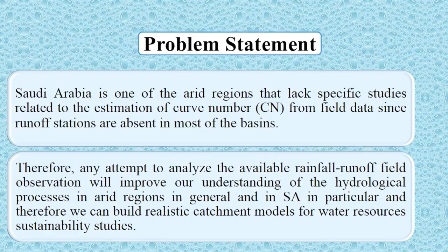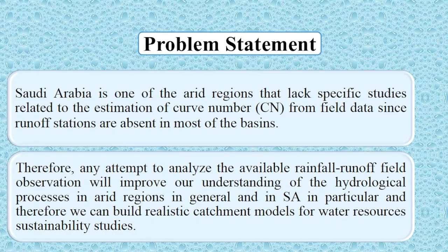Our problem statement: Saudi Arabia is one of the arid regions that lack specific studies related to estimation of curve number from field data, since runoff stations are absent in most of the basins. Therefore, any attempt to analyze the available rainfall-runoff data from field observations will improve our understanding of the hydrological processes in arid regions in general and in Saudi Arabia in particular, and therefore we can build realistic catchment models for water resources and sustainability studies.